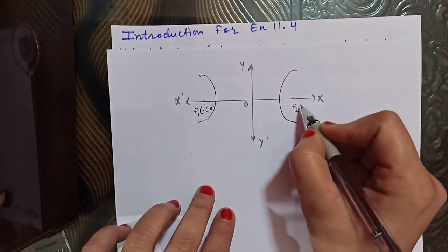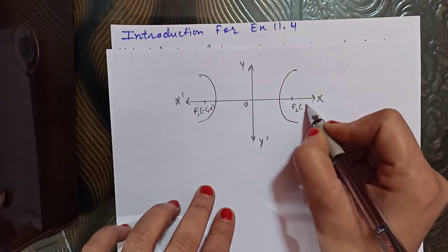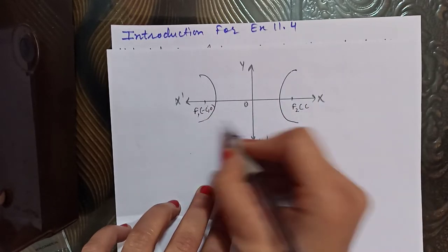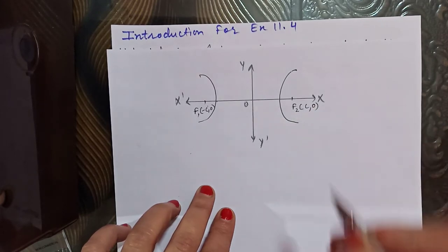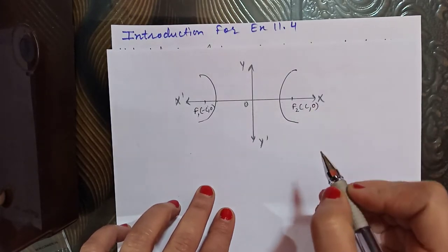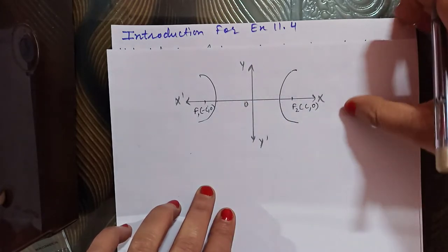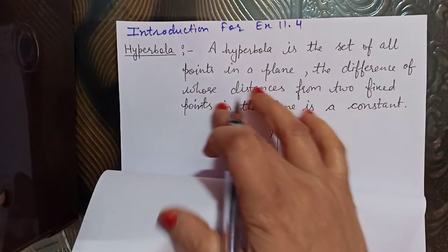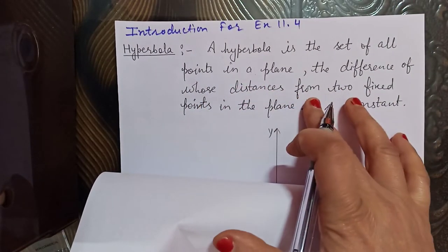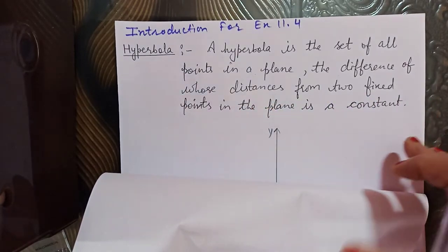The foci coordinates are (c, 0). If we have both sides, it will be plus-minus c. These are the fixed points, and the difference of whose distances from two fixed points in the plane is constant.